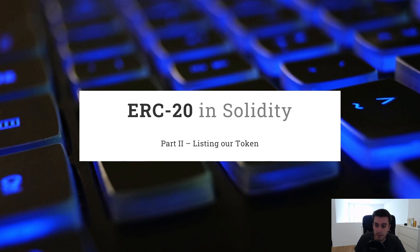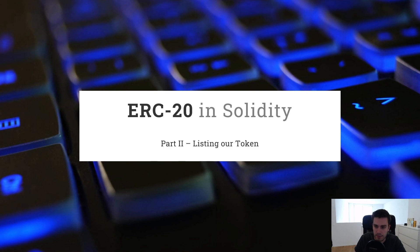Before we deploy our ERC20 token and provide liquidity for it, let's see first what is actually a decentralized exchange. A decentralized exchange is a kind of cryptocurrency exchange which operates on the blockchain. It's different to a centralized exchange where we have a central single entity which controls the trades. A DEX is actually just a smart contract on the blockchain which automatically controls swaps between two different tokens. And these tokens which we want to swap on EVM chains, we are using the ERC20 standard.